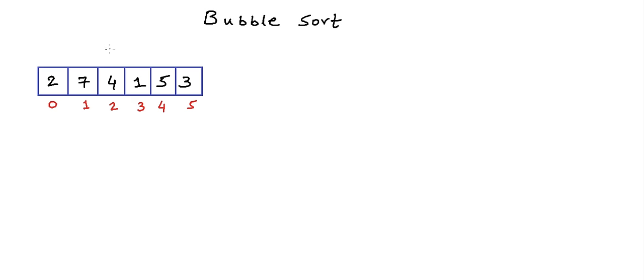Let's say we have a list of integers given to us in the form of an array. Let's name this array A. We have six elements in the array, so we have indices from 0 to 5. We want to sort this array — rearrange the elements in increasing order. What we are going to do in this algorithm is scan the array from left to right multiple times. We will call each scan one pass on the array.